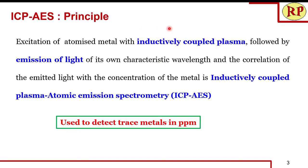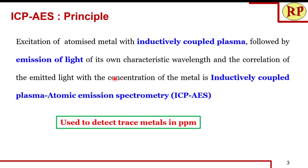Instead of the flame, we are going to use inductively coupled plasma for the excitation of the atomized metal. When this excited atom returns back to the ground state, it emits light of its own characteristic wavelength. It is mainly used to detect trace elements — even if the element is present at the ppm level, it can be determined using ICP-AES.